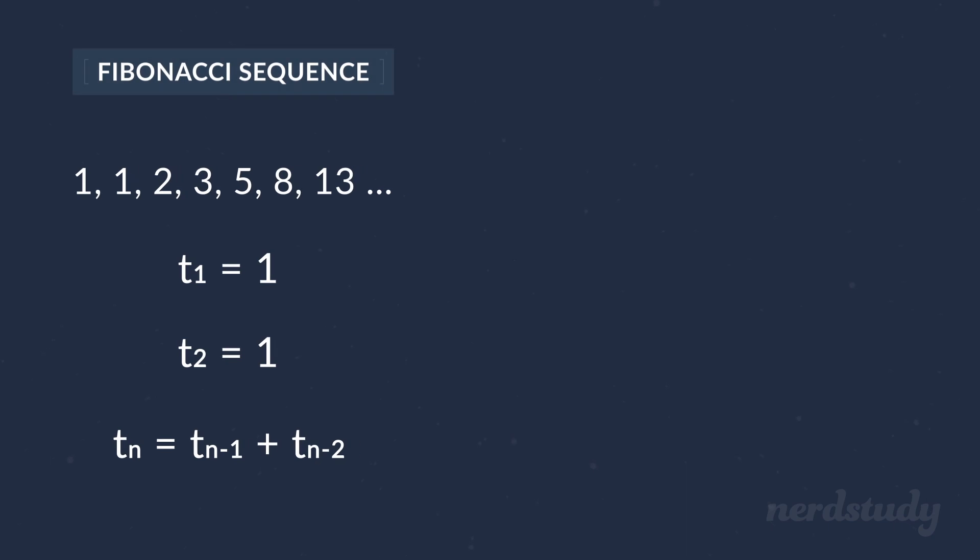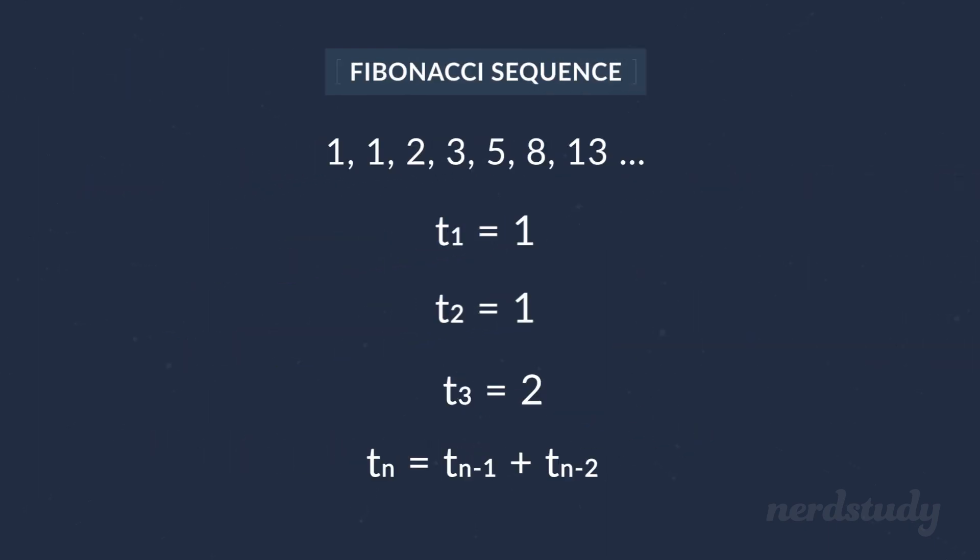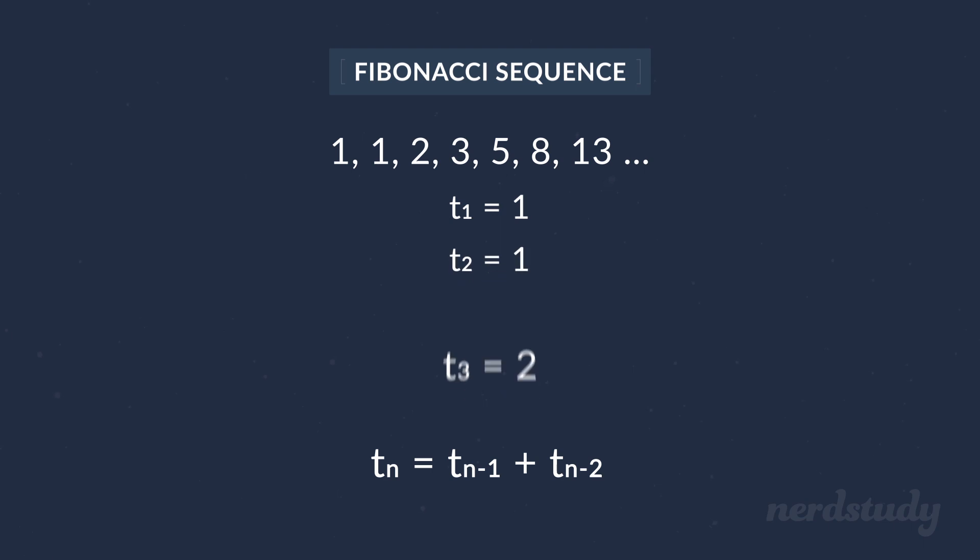So, let's just try a quick example and plug 3 into the formula to solve for the next term. If we plug 3 into the formula, we get the following. Simplifying gives us t of 3 equals t of 2 plus t of 1. Here, we are given what t of 1 and t of 2 are equal, so let's replace them with their values. Finally, we get our final value of t of 3 equals 2. And now that we know the value of t of 3, we can continue on and solve for the value of t of 4 and so on.